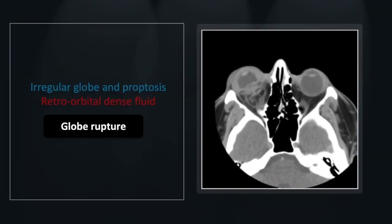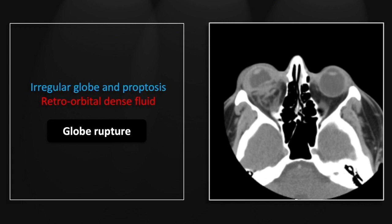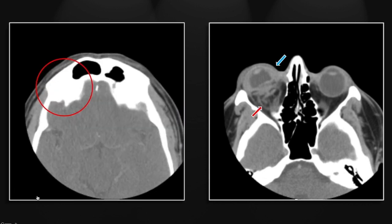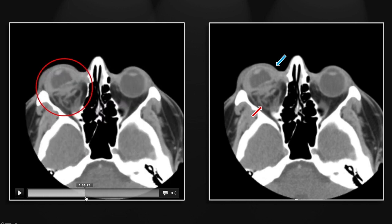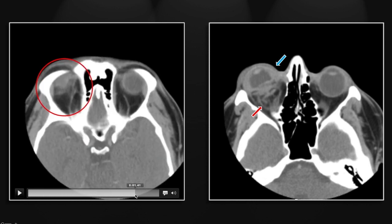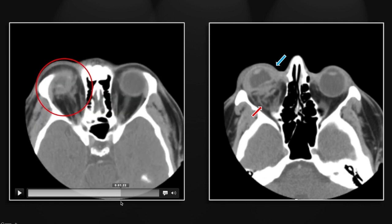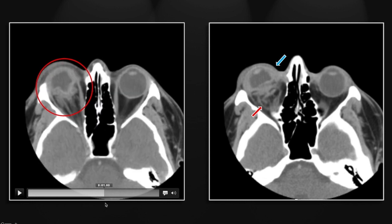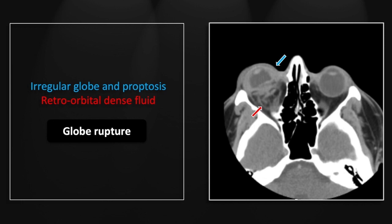The next case is a globe rupture, a more straightforward one due to a direct blow. You can see the abnormal irregular contour of the globe, especially posteriorly. There is significant proptosis due to the retrobulbar hemorrhage — those wispy densities in the retrobulbar fat. Note the stretching of the optic nerve consistent with proptosis. That is a case of globe rupture.